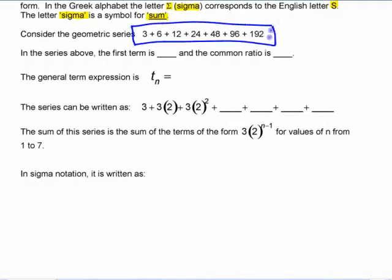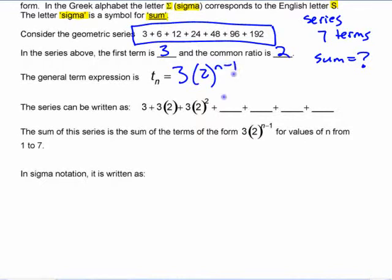So here's a series with seven terms. The sum is something, I don't know. We could figure out the sum, but that's not the point of this. The point is being able to write a shorthand for that. The first term is three and the ratio is two. The general term for that sequence of numbers is three times two to the n minus one.